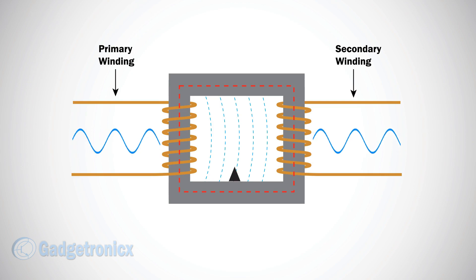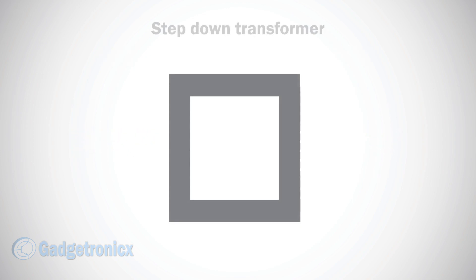Transformers can either increase the input voltage in the primary winding to higher voltage as output in the secondary winding, or it can decrease the input voltage from the primary winding to lower voltage levels as output in the secondary winding. The coil windings in a transformer decide whether the voltage is being stepped up or stepped down.